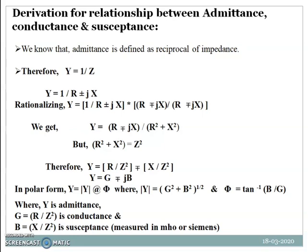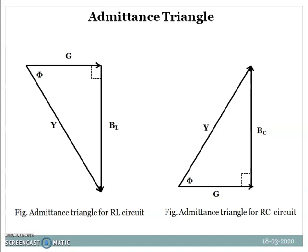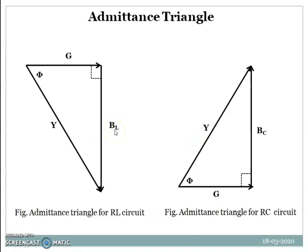This is the main important concept for parallel AC circuits. Now let's understand the admittance triangle. Just as we have an impedance triangle, we have an admittance triangle. There are two types: the admittance triangle for an RL parallel circuit and for an RC parallel circuit. Both are right-angle triangles with conductance along the base, susceptance along the height, and admittance along the hypotenuse.